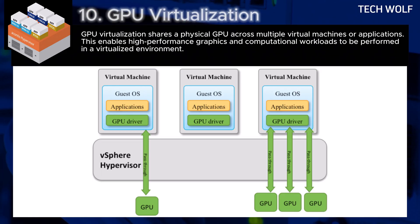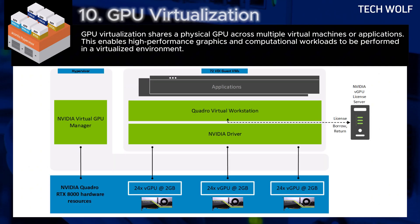GPU virtualization shares a physical GPU across multiple virtual machines or applications, enabling high-performance graphics and computational workloads to be performed in a virtualized environment. An example is NVIDIA vGPU technology, which allows multiple virtual machines to access a single GPU for tasks like 3D rendering or AI model training. A virtual desktop environment can provide GPU acceleration for engineering or design applications.